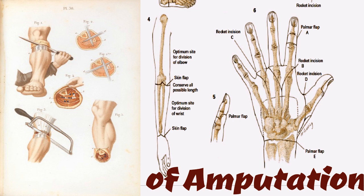The skin is prepared with the usual antiseptic solutions well above and below the proposed site of amputation. In major amputations, the entire extremity may be wrapped in sterile adherent plastic drapes to enable the assistant to hold it and change its position as desired.